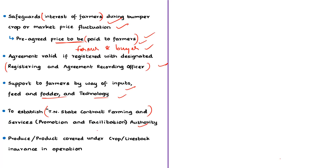The act provides for establishing an authority known as the Tamil Nadu State Contract Farming and Services Promotion and Facilitation Authority. This authority will ensure proper implementation of the act and make suggestions to the state government for the promotion and better performance of contract farming. The contract farming produce is also covered under the crop insurance or livestock insurance scheme of the central or state government.